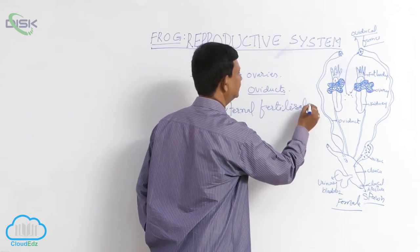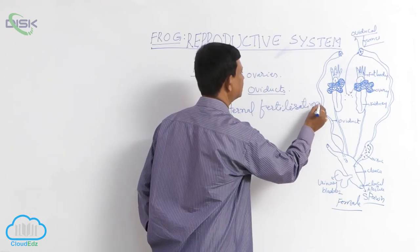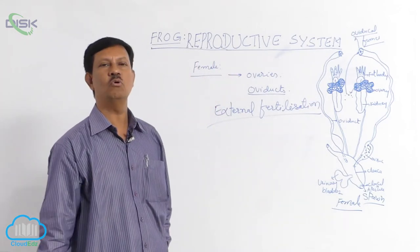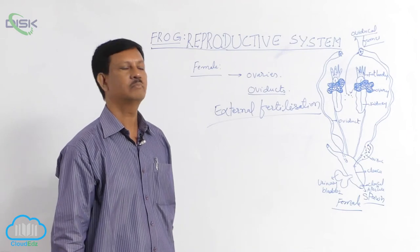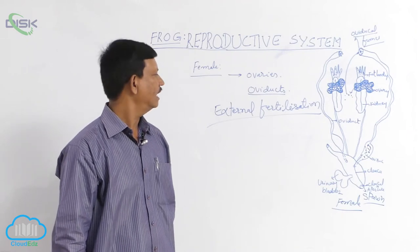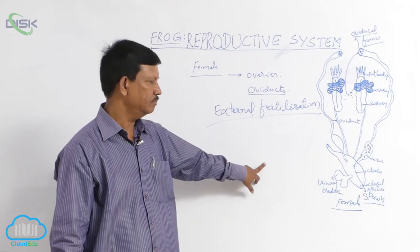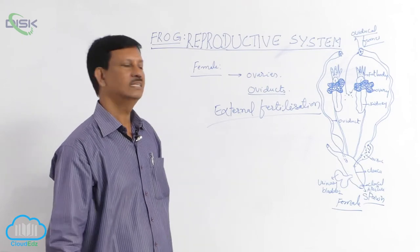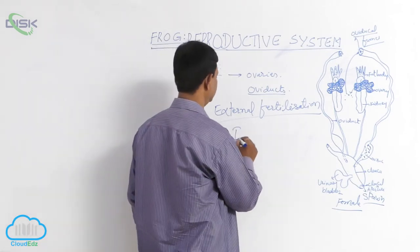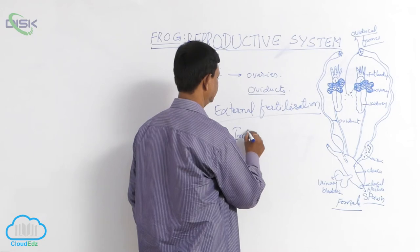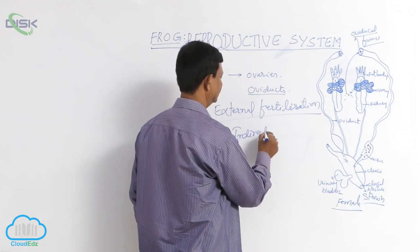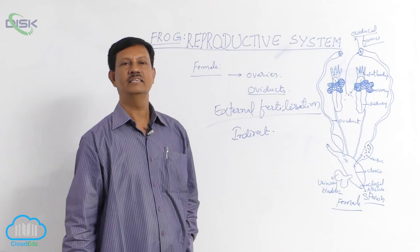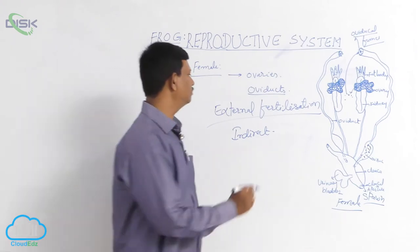External fertilization takes place in frog because in male frog no copulatory organs are present. The development of the embryo takes place in the water, and the development is indirect development.